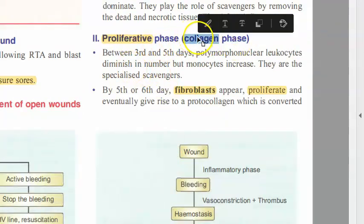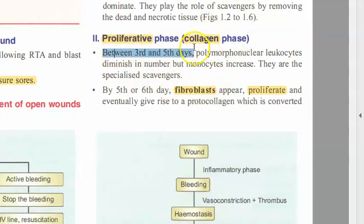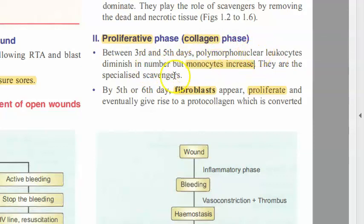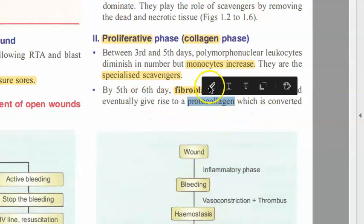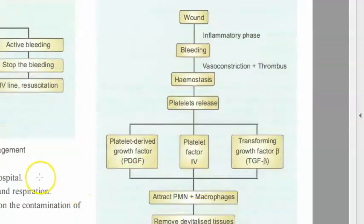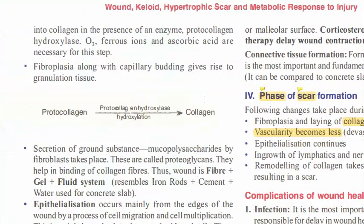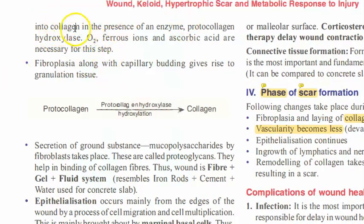Next we go to the proliferative phase — that is the collagen phase. Now you have to bring the collagen and repair. From day three to five, neutrophils diminish and monocytes increase as specialized scavengers. By day five to six, fibroblasts appear and proliferate, giving rise to protocollagen, which is then converted into collagen in the presence of the enzyme protocollagen hydroxylase.